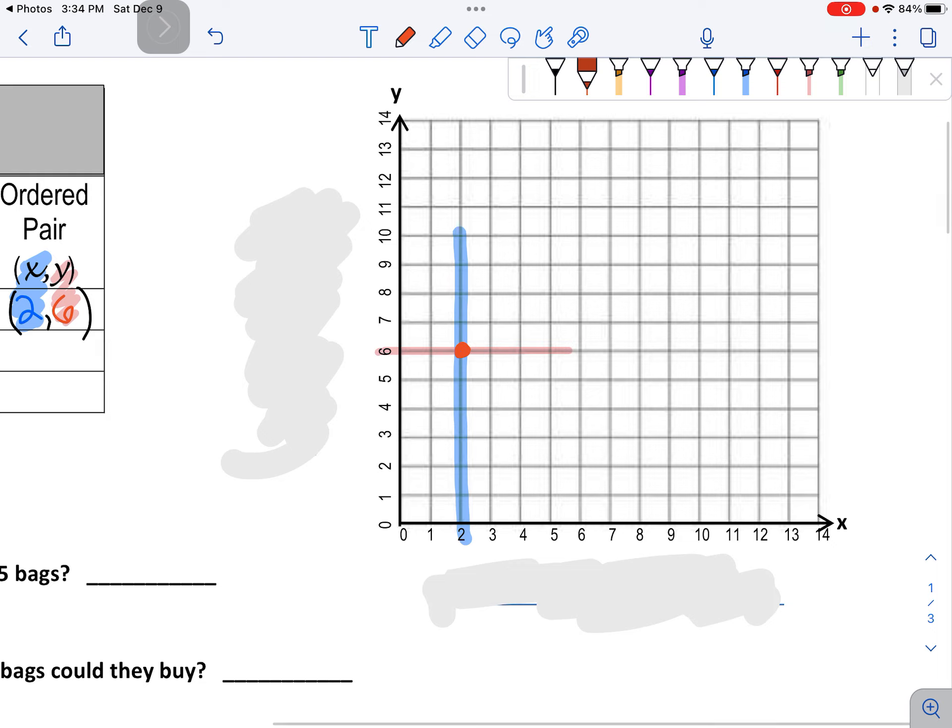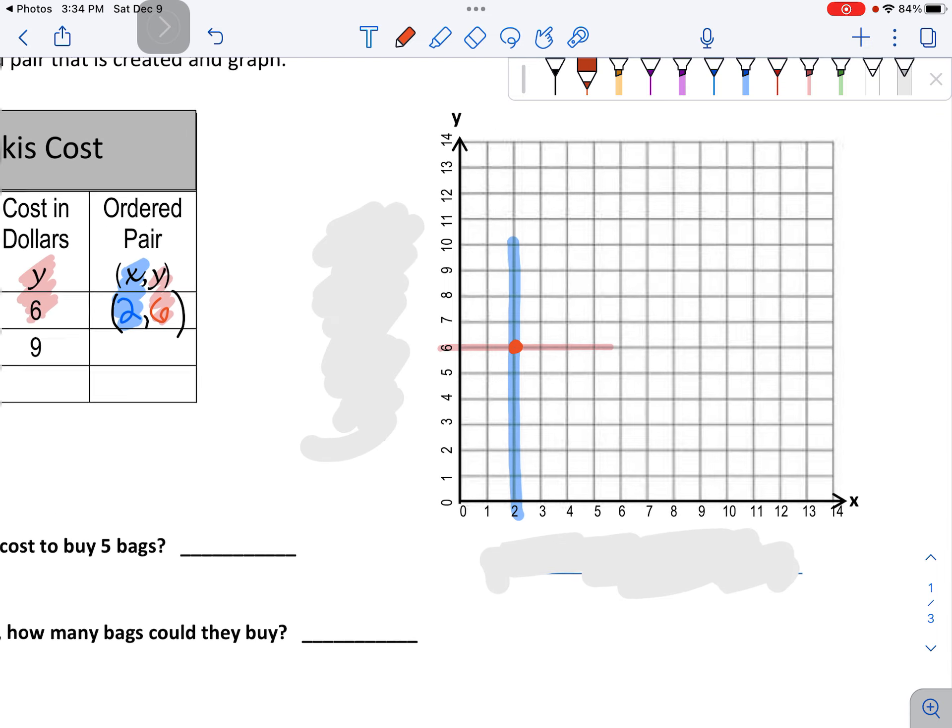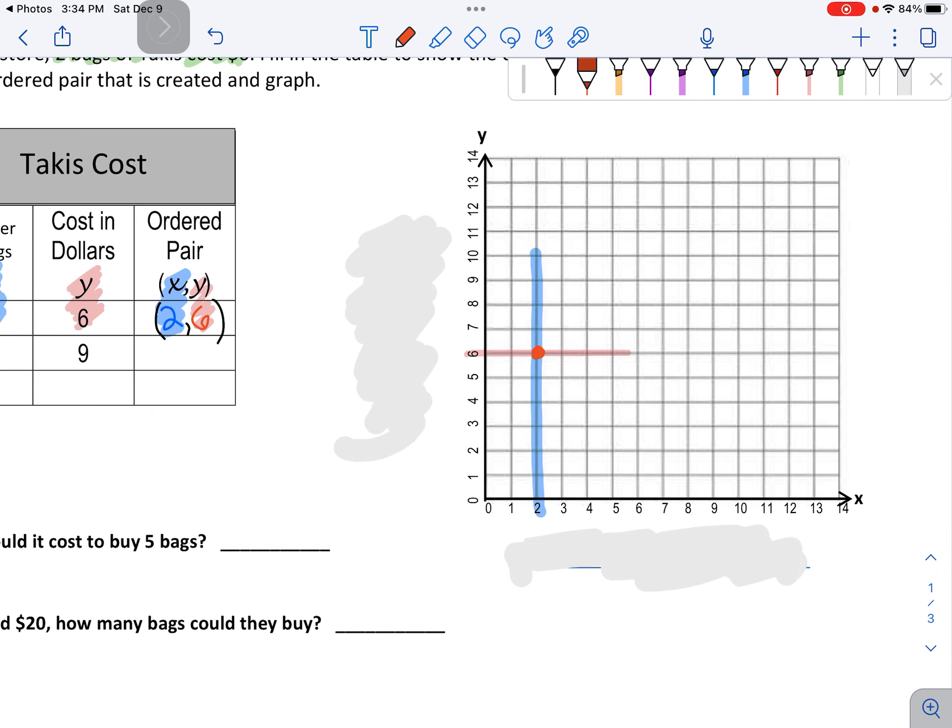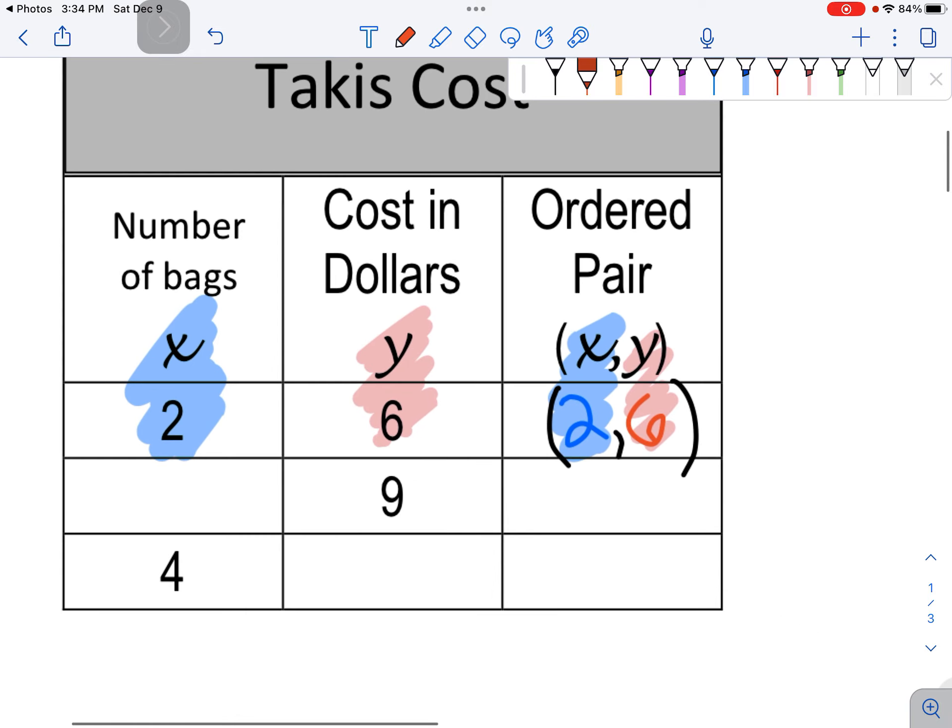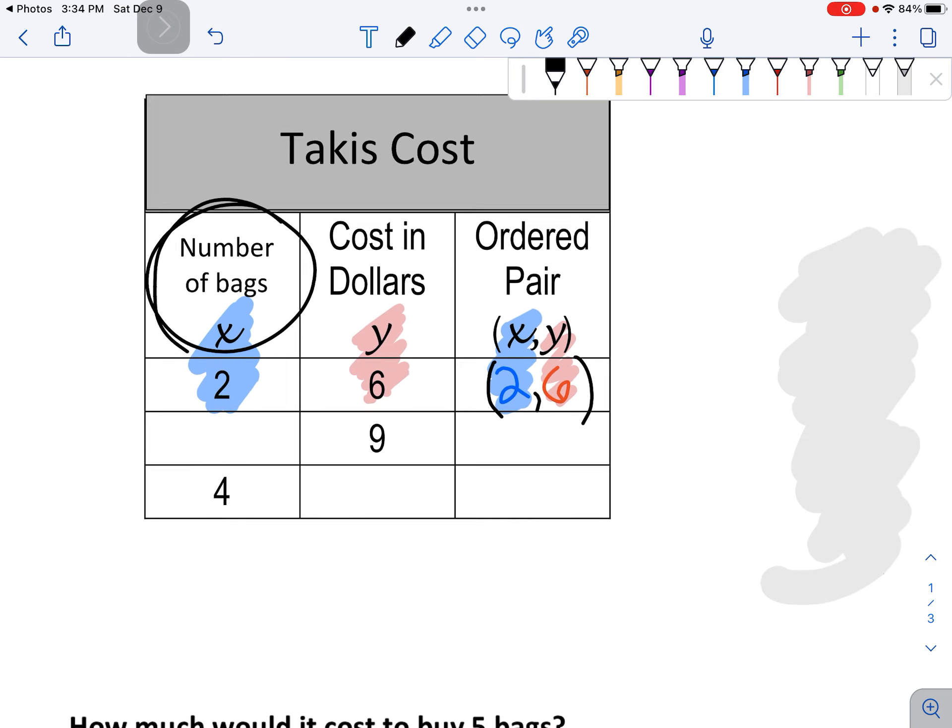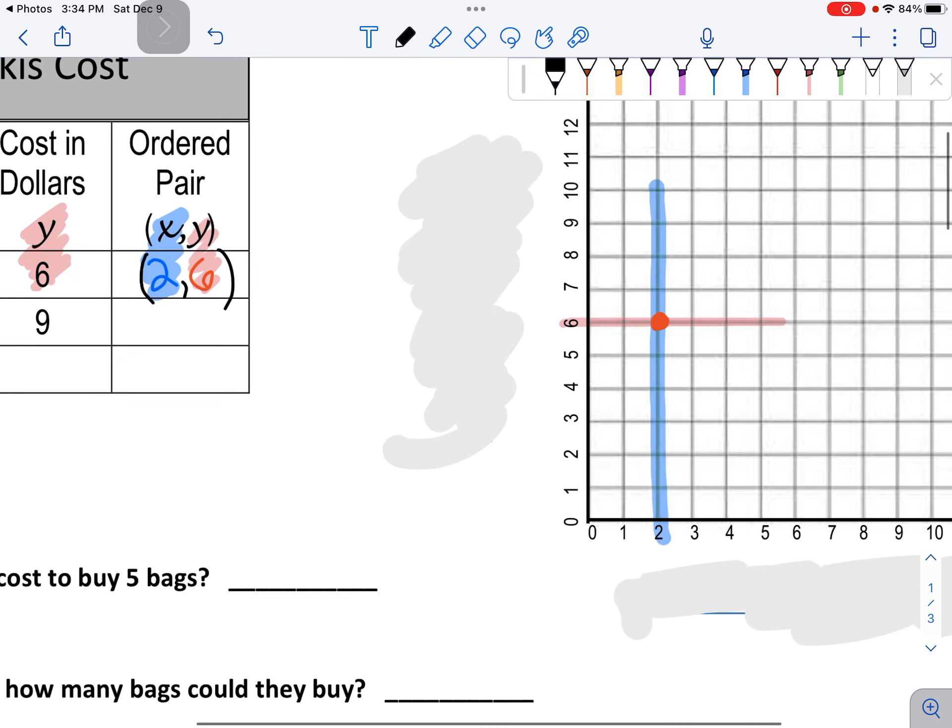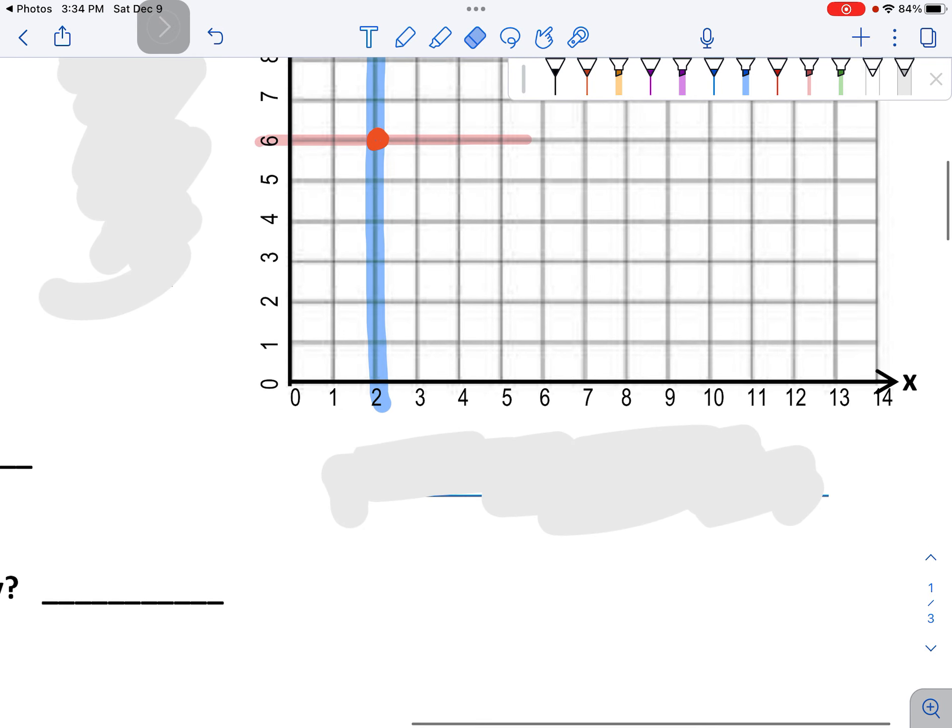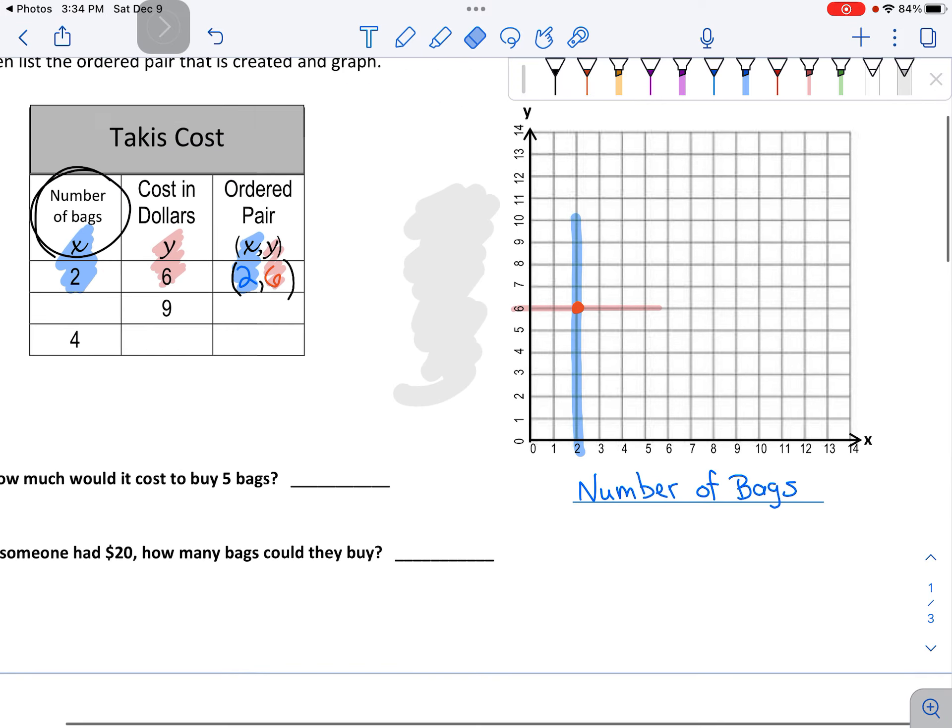At this point, I also noticed that I should have some labels here. So let's go back to the table where it said x. It said number of bags. So on this line underneath, I need to put number of bags.